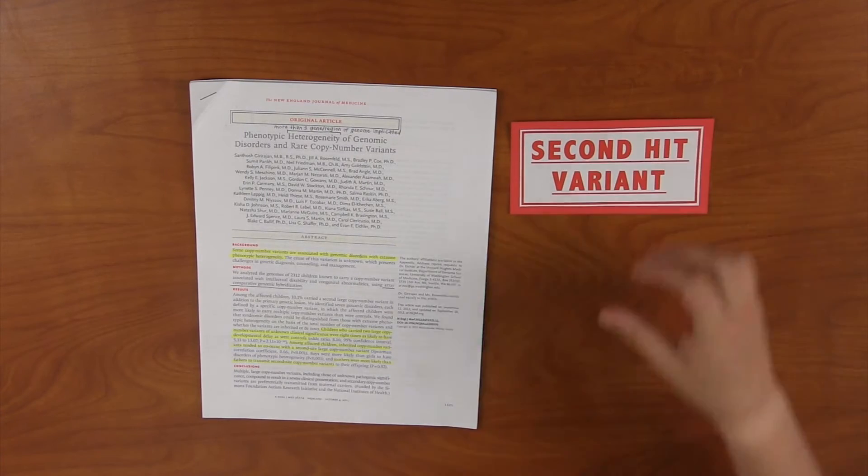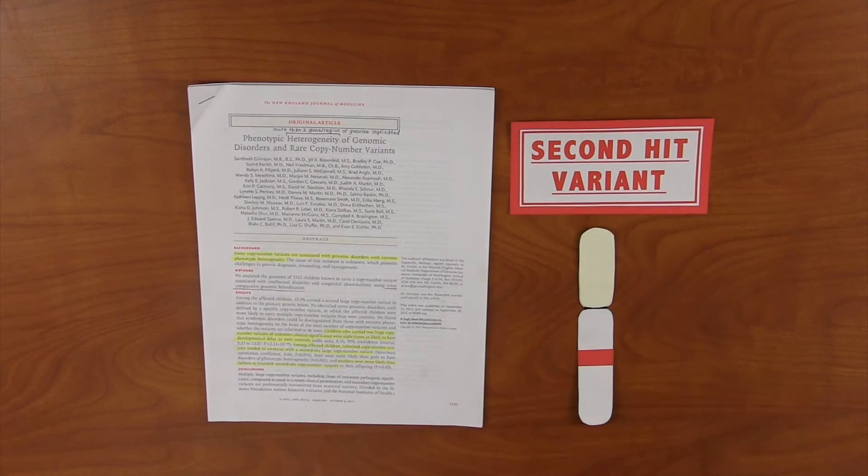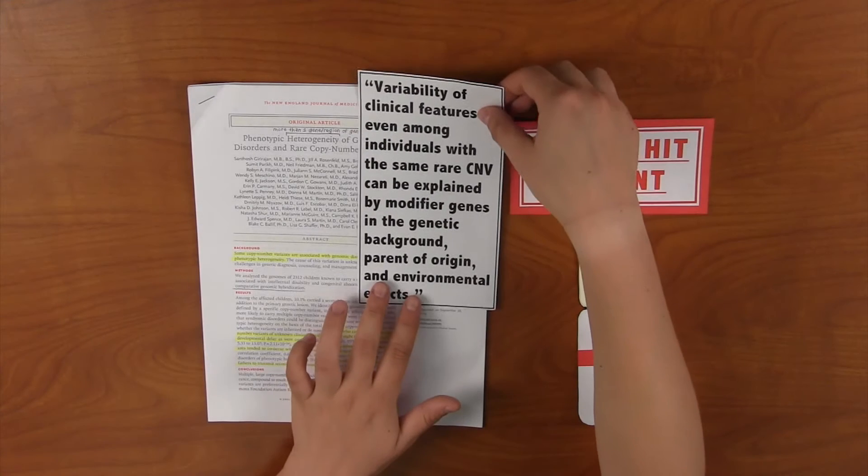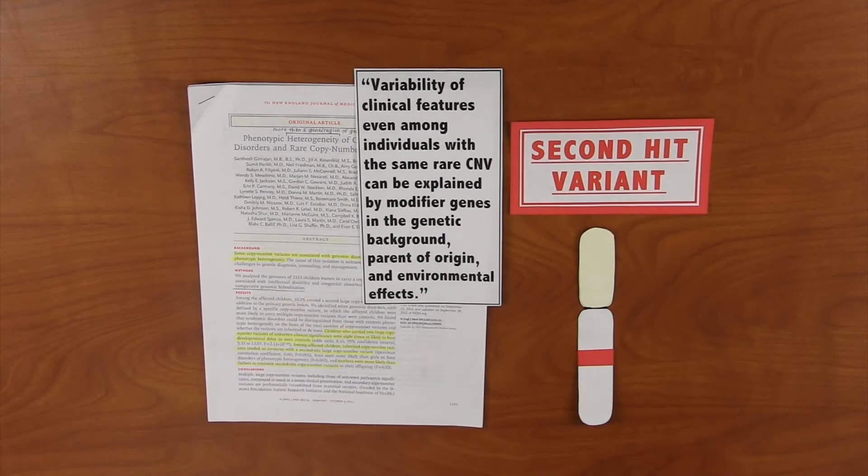Older research also supported the theory that variability of clinical features, even in individuals with the same rare CNV, can be explained by other interacting genes, which parent passed on the mutation to the child, and environmental effects that could also play a factor in the presentation and severity of disease.